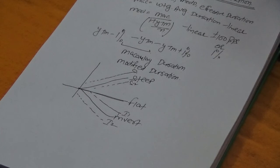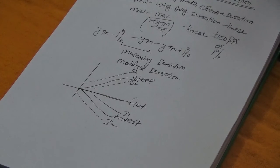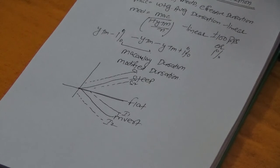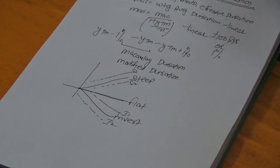Suppose we are interested in calculating the duration only for a respective segment of the yield curve. We are not interested in calculating for the entire yield curve — we are interested in calculating for a specific segment. This is why key rate duration is very important. Key rate duration measures the duration of a security or portfolio at a specific maturity point along the entire yield curve, while keeping other maturities constant.